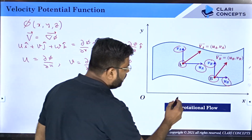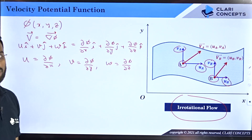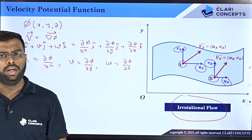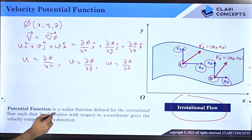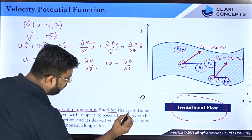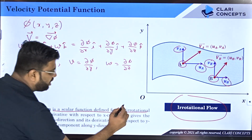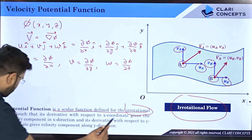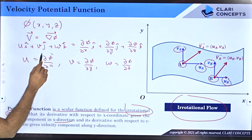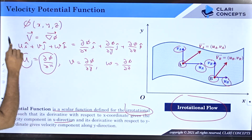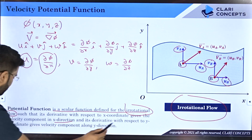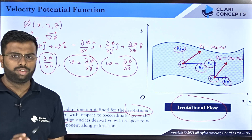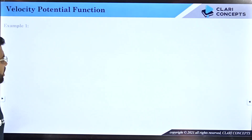Whenever you have irrotational flow, you can easily find the velocity potential function and use it to calculate the velocity fields. So, the potential function is a scalar function defined for irrotational flow such that its derivative with respect to x gives velocity component u in the x direction, its derivative with respect to y gives v, and similarly for z. Now let us solve several numericals based on this velocity potential function.